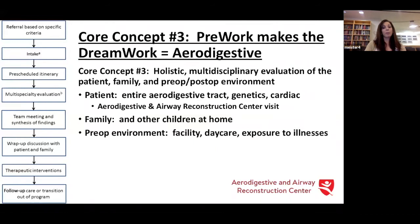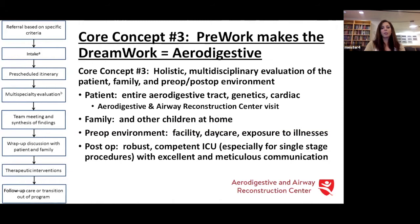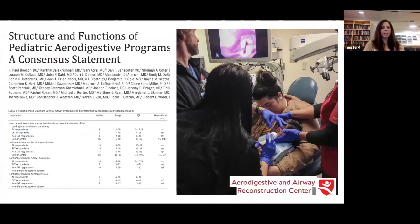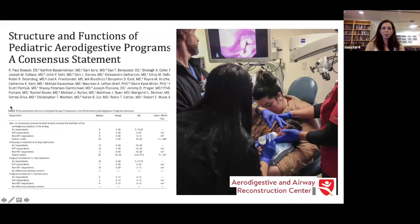We want to know their pre-op environment — are they coming from a facility, are they in daycare, what are their exposures? We have to think about their post-operative environment and the competency of our ICU, especially for single-stage procedures. It's very important to have a meticulous communication pathway with your intensivist and be sure they feel comfortable calling and asking, because we're all really learning together about how to best care for these kids. The consensus statement for the structure and function of a pediatric aerodigestive program, authored by Karthik and Doug and other leaders in the space, outlines minimum standards of what a center should be doing to qualify as an aerodigestive program.